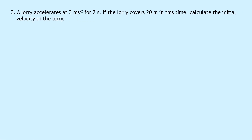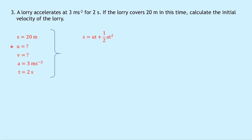Question three says that a lorry accelerates at 3 meters per second squared for 2 seconds. If the lorry covers 20 meters in this time, calculate the initial velocity of the lorry. So we're looking for U. Writing down SUVAT on the left: S equals 20 meters, U equals question mark, we don't know the final velocity, acceleration is 3 meters per second squared, and time is 2 seconds. Putting a star next to U, and writing S equals UT plus a half AT squared, substituting in gives 20 equals 2U plus a half times 3 times 2 squared. Simplifying: 14 equals 2U, so dividing both sides by 2 gives U equals 7 meters per second.